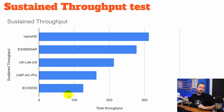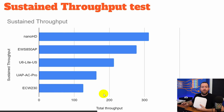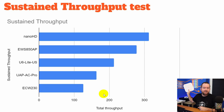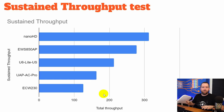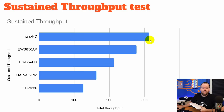And then the biggest shock of all: the $499 4x4 multi-user MIMO Wi-Fi 6 ECW230 from Ingenious had the worst sustained throughput. I ran this test multiple times because it didn't seem like I was getting the correct results. I took the ECW230 down, put the Nano HD in its place, and tested again right after — literally the same day, same test environment, same everything. And the Nano HD was about two and a half times faster on the sustained throughput than the ECW230.